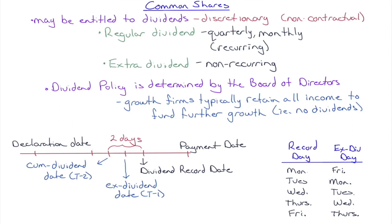A dividend can be a regular dividend — a recurring dividend paid quarterly or monthly. Corporations typically pay dividends quarterly. Some pay monthly, especially real estate investment trusts and different tradable trusts. Just be aware there are shares you can buy that may have a monthly dividend as opposed to a quarterly dividend.